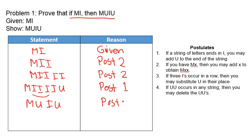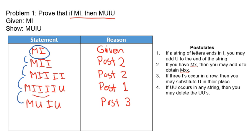So let's take a look at what we've done. We've shown that if MI is true, then MII is true, then MIIII is true, then MIIIIU is true, then MUIU is true. So if the hypothesis is true, then the conclusion must be true. That says that our conditional statement — if MI, then MUIU — must be true.